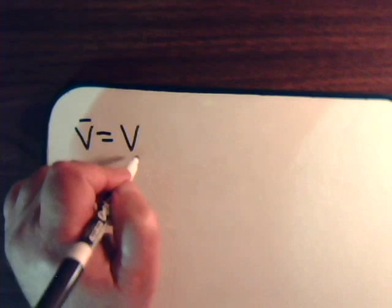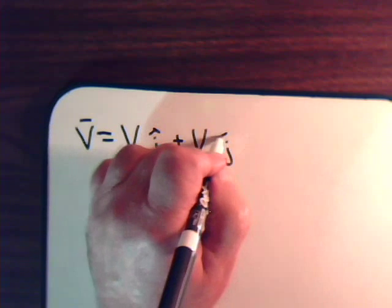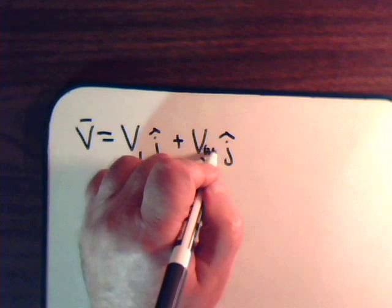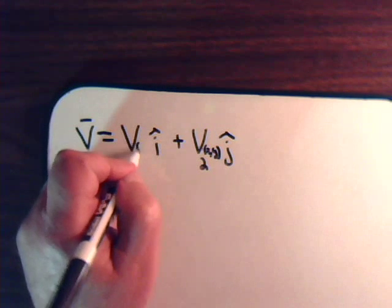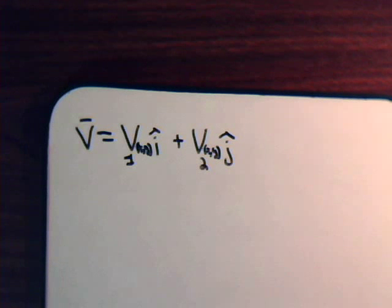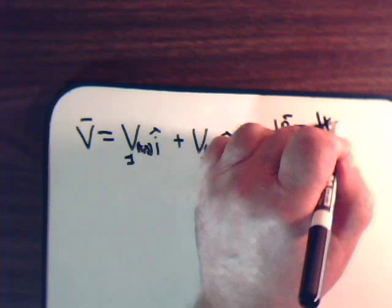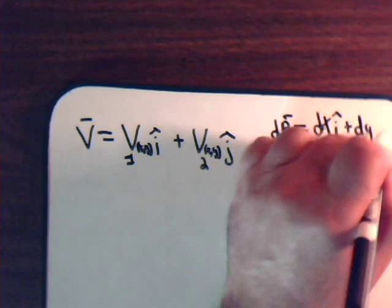Now let's say that we have a vector v and we're just in two dimensions. So v has a v1 component times i plus a v2 component times the unit vector j, and each of these can be a function of x and y. What we've been doing is taking the dot product of this with the differential position vector dr, which is just dx·i plus dy·j.